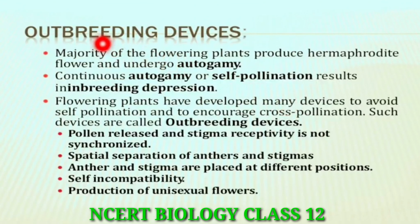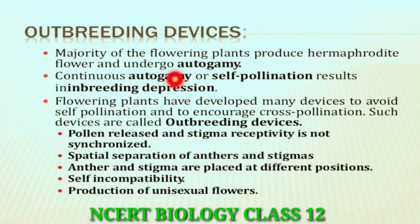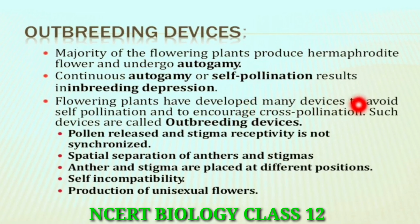Next, outbreeding devices. The majority of flowering plants produce hermaphrodite flowers, which means they have both male and female characters, so that self-pollination can automatically occur. To avoid this, plants should prevent self-pollination to encourage cross-pollination. Continuous self-pollination results in inbreeding depression, so many plants have developed devices to avoid self-pollination and encourage cross-pollination.